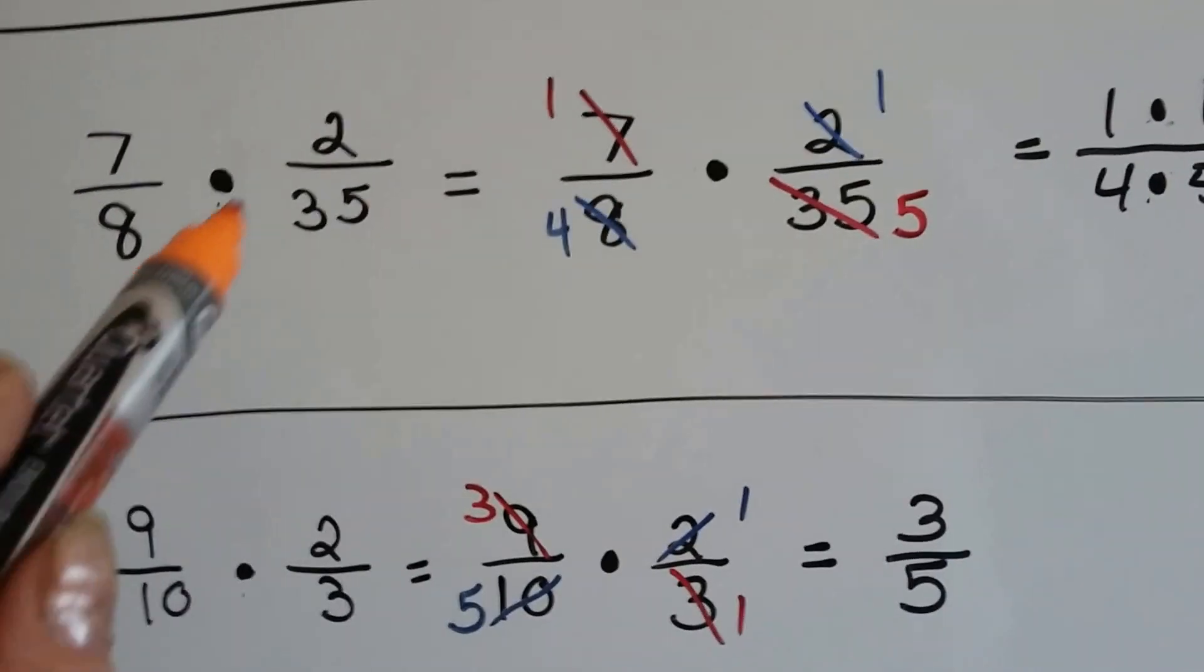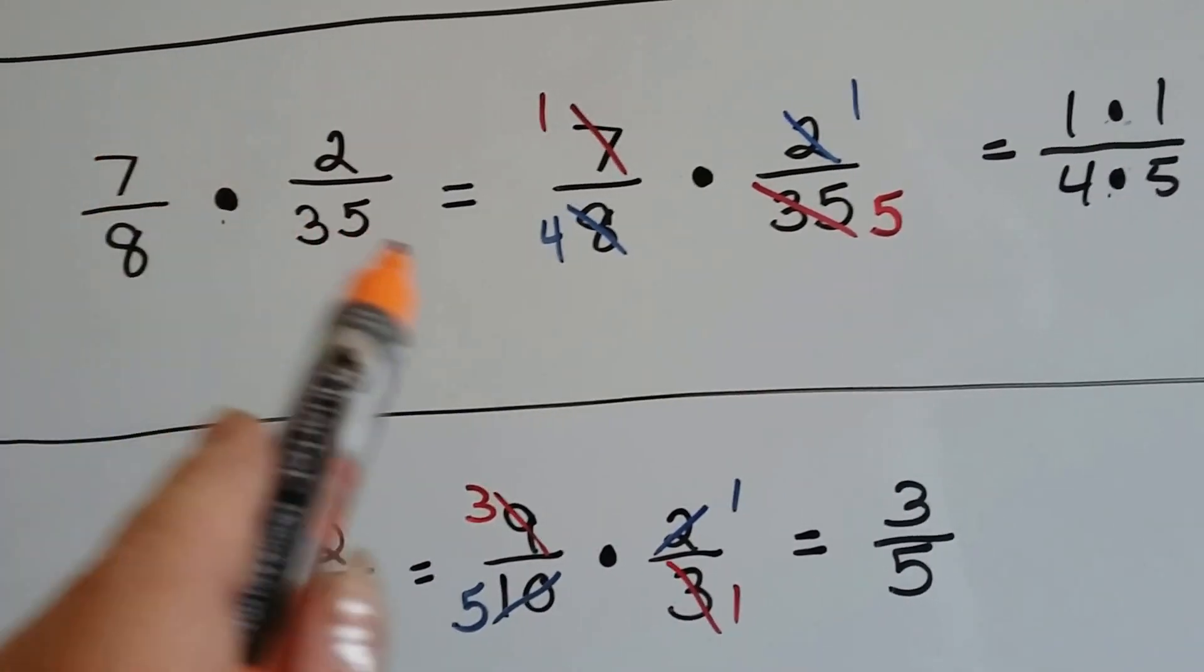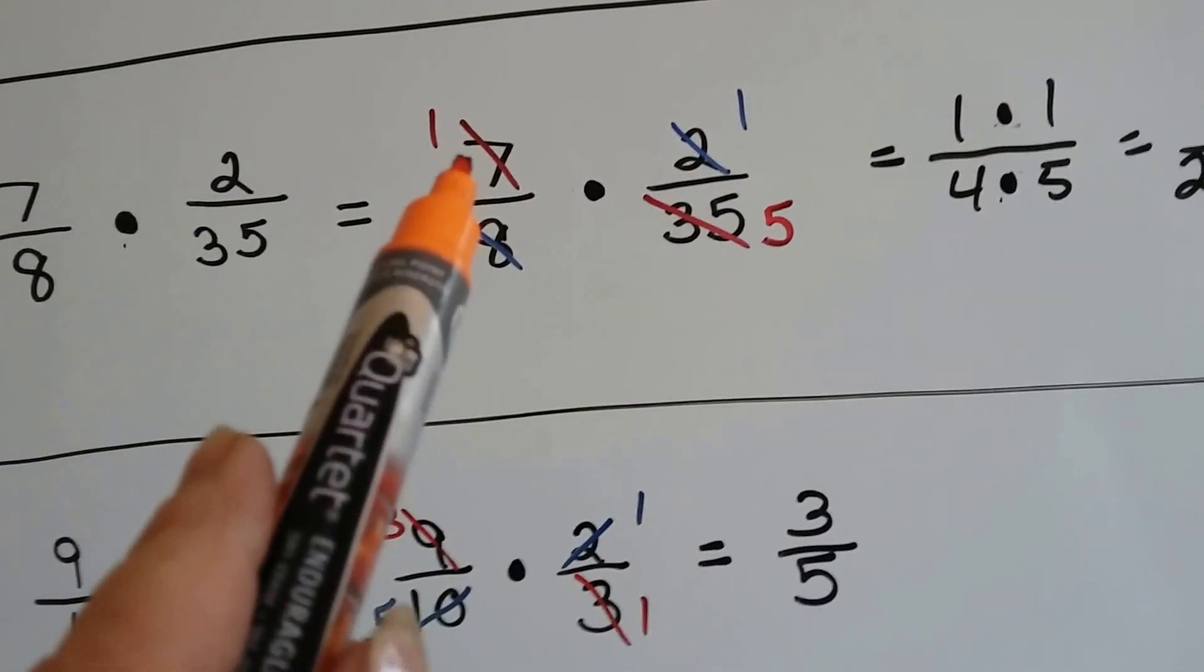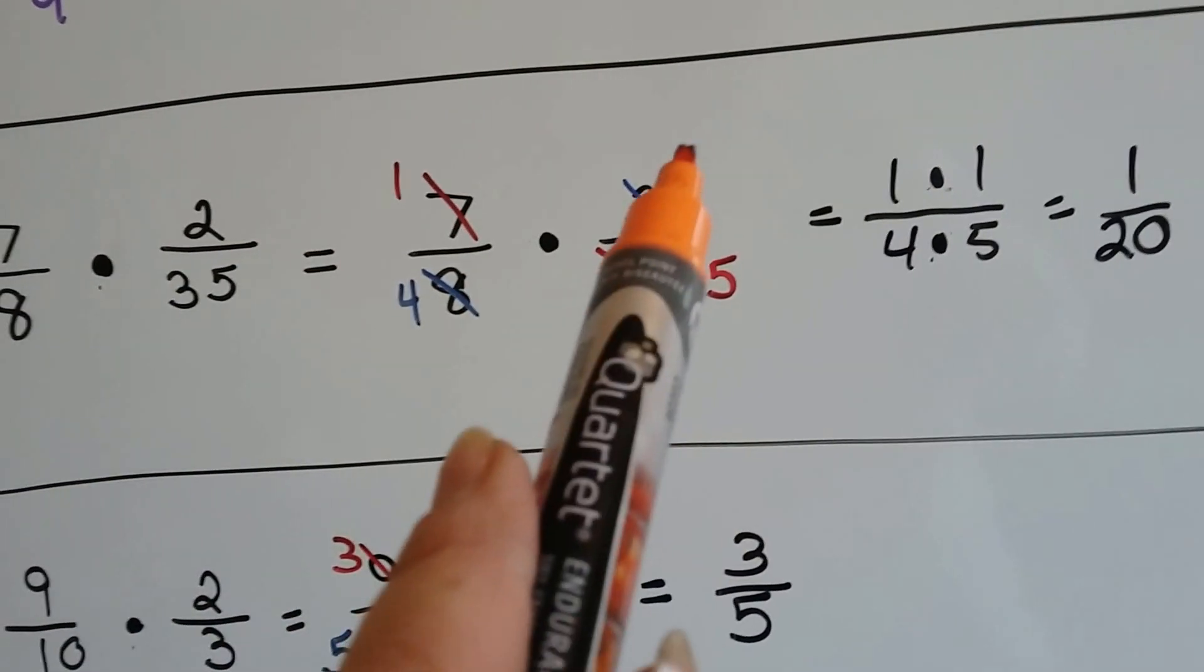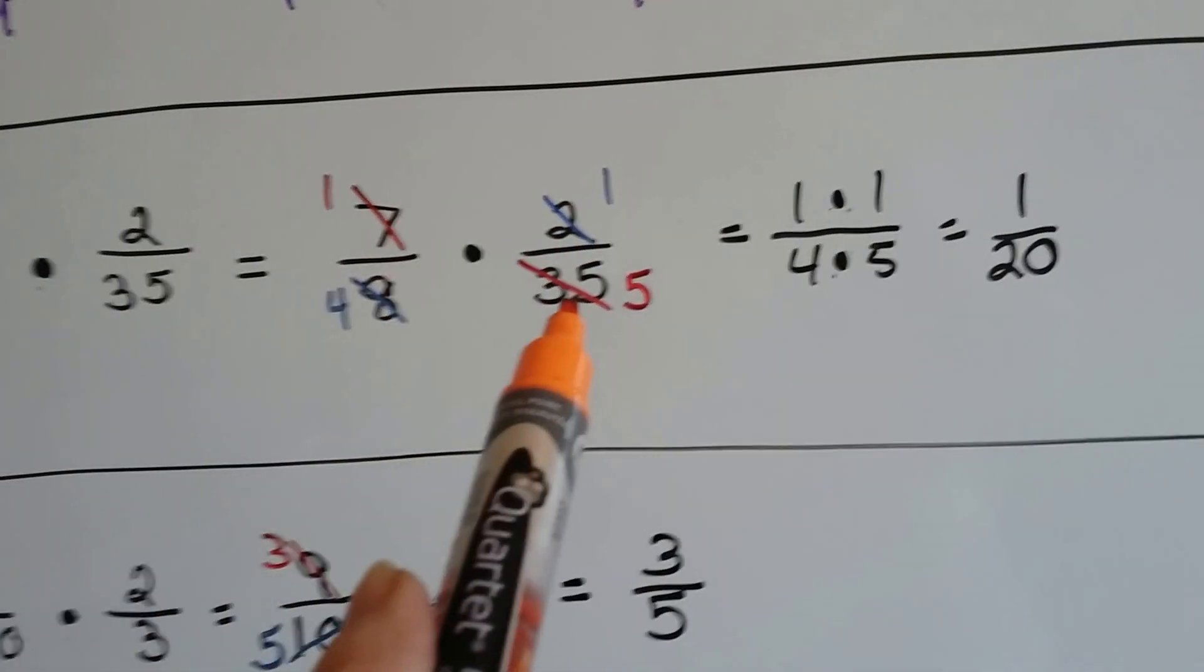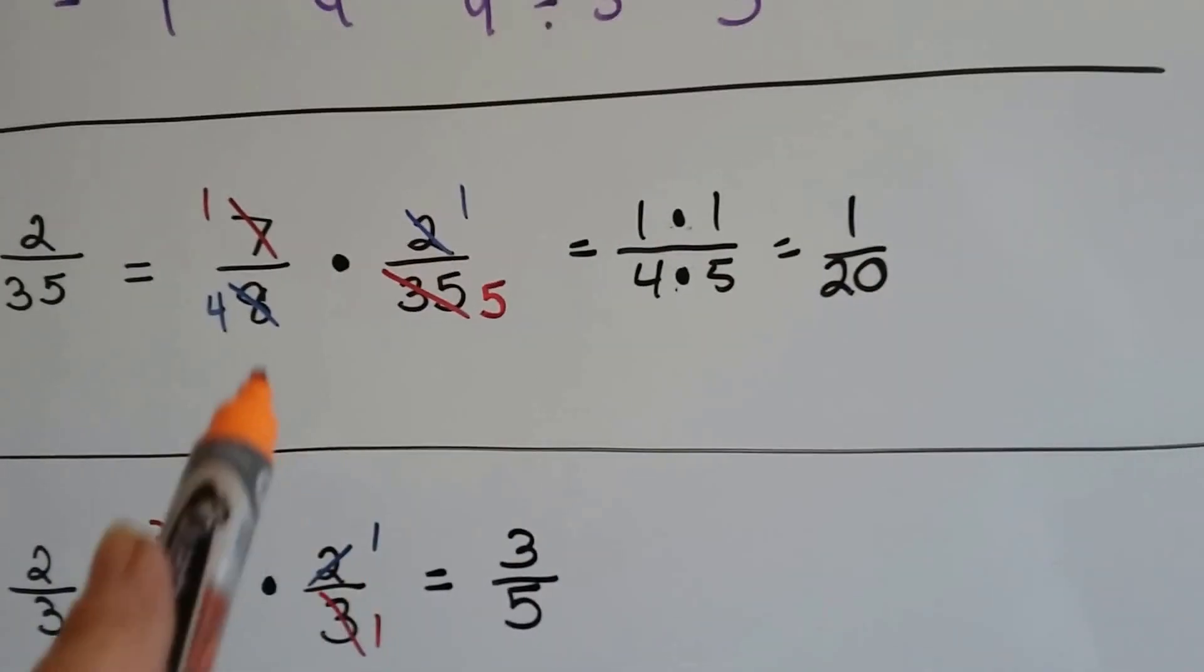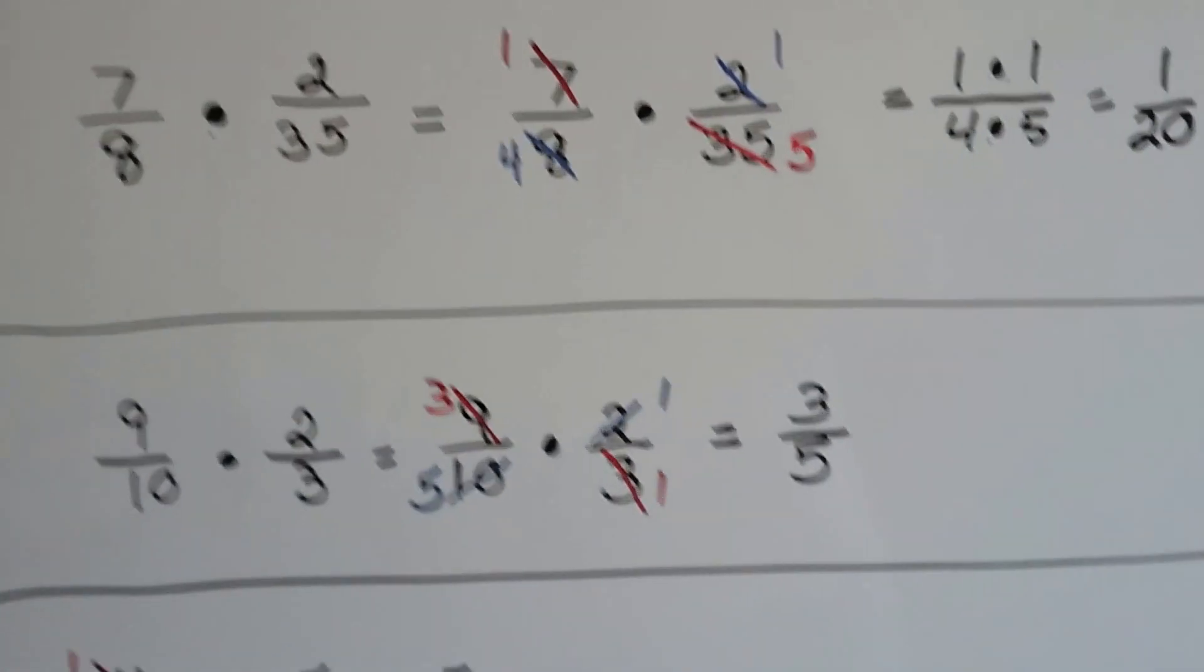Let's look at this one, seven-eighths times two-thirty-fifths. I can see right away that these can cancel each other out because seven can go into 35 and two can go into eight. One seven goes into 35 five times, so that becomes a one and that becomes a five. One two can go into eight four times. So now instead of seven times two over eight times 35, which would have been a really big fraction to reduce, we end up with one times one over four times five. We end up with one-twentieth. Can you imagine multiplying eight times 35 and then having to reduce that fraction? Canceling out is so much easier.